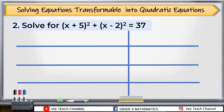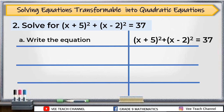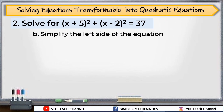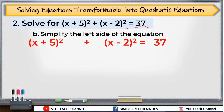Next, let's have this problem: solve the quantity x plus 5 squared plus the quantity x minus 2 squared, equal to 37. Let's write our equation, and then simplify the left side. Our example has the square of a binomial — we have the quantity x plus 5 squared and the quantity x minus 2 squared.